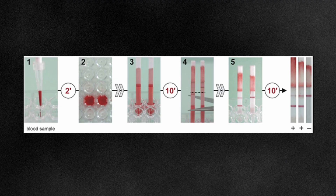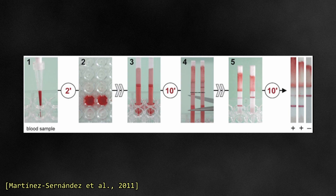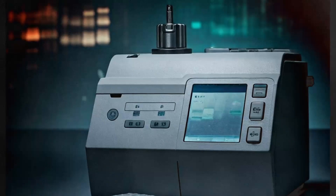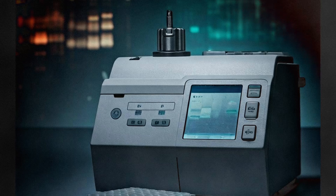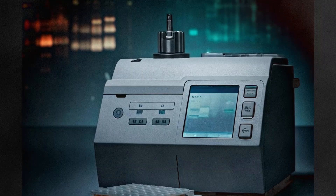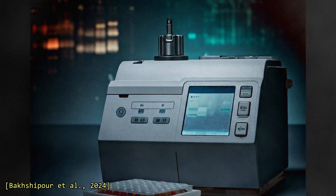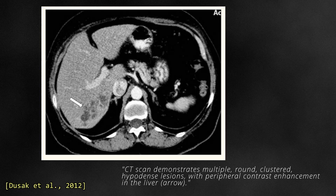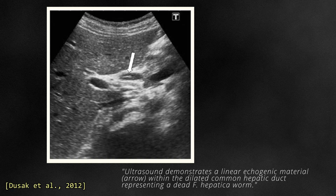Emerging point-of-care tests for Fasciola antigens are showing promise for field diagnosis, providing faster results than traditional stool microscopy. One example is the lateral flow immunoassay test Sirofluke, while a rapid point-of-care immunochromatographic device has been developed more recently. PCR-based methods are now more commonly used, especially in chronic infection or when stool samples fail to show eggs, as these molecular techniques can detect Fasciola DNA with greater sensitivity and accuracy. Radiologically, fascioliasis can appear as multiple confluent lesions with tunnel-like branching on CT scan, and as small linear echogenic lesions on ultrasound.